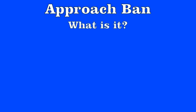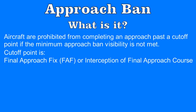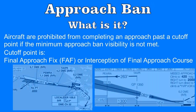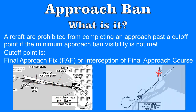So what is the approach ban? Essentially the approach ban is a regulation that prohibits the pilot from continuing an approach past a certain point if the required visibility minima is not met. The cutoff point for an approach is normally the final approach fix, or FAF, usually marked by a little cross on the approach plate, or if there is no FAF, the point where the aircraft intercepts the final approach course.